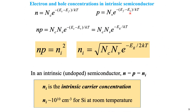The electron and hole concentrations in an intrinsic semiconductor are given by: n = N_C × e^(−(E_C − E_F) / kT) and p = N_V × e^(−(E_F − E_V) / kT), where N_C and N_V are the effective densities of states at 0 K. Both concentrations depend on temperature. Multiplying n and p gives n·p = N_C × N_V × e^(−E_g / kT), where E_g = E_C − E_V is the band gap. Since n·p = n_i², and for an intrinsic semiconductor n = p = n_i, the intrinsic carrier concentration for silicon at room temperature is approximately 10^10 per cm³.